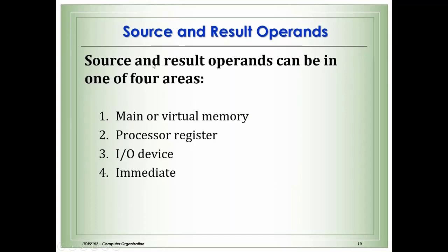The source and result of operands can be found in one of four areas: main memory, a processor register, an input/output device, or immediately within the instruction itself — for example, 'Move Immediate A' means the operand is found immediately in the instruction.